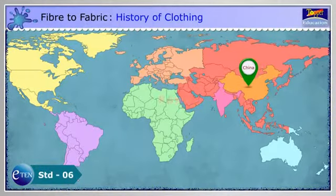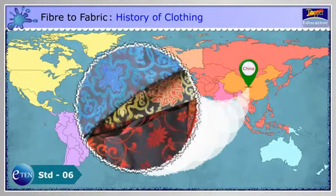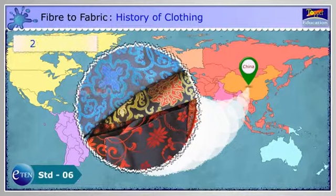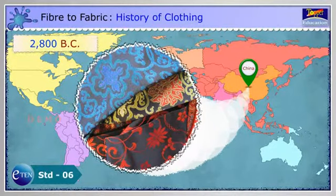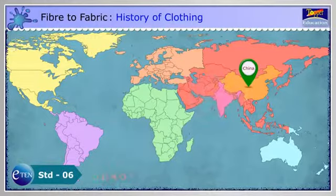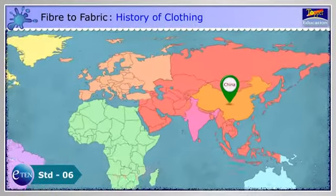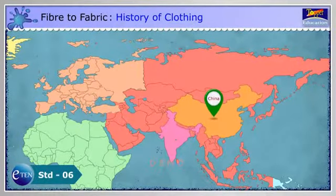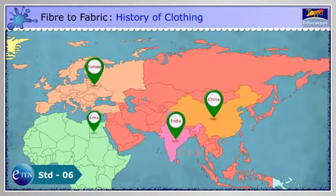In China, silk production began around 2800 BC and became a major export, opening up trade routes and partnerships with countries worldwide.